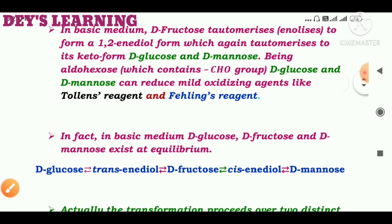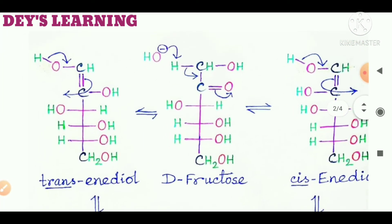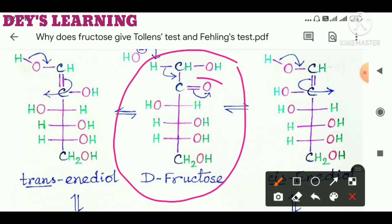The structure of D-fructose is shown here. Of course, it is a keto hexose — this is the structure of D-fructose. It contains a keto group. We know that only an aldehyde gives a positive Tollens' test and Fehling's test; aldehyde can reduce Tollens' and Fehling's reagent. But being a keto hexose, D-fructose can also reduce Tollens' reagent and Fehling's reagent.